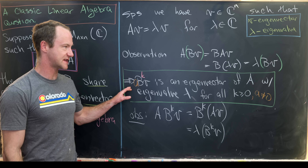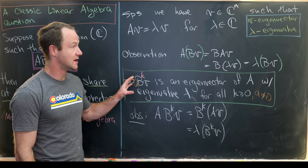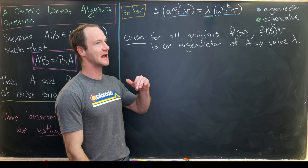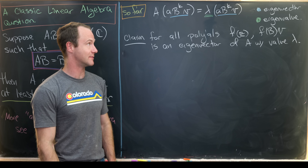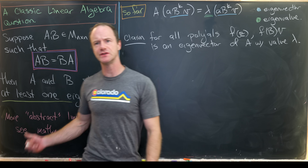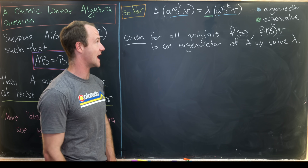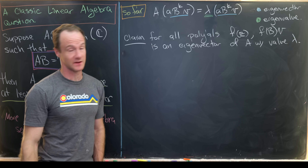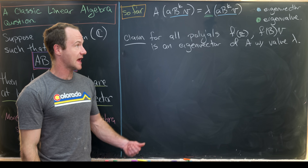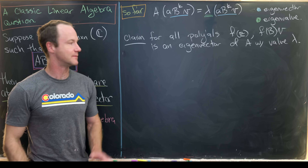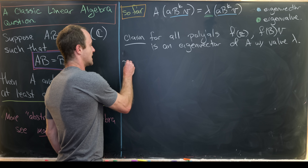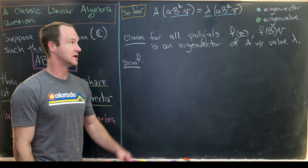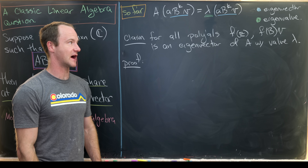We can generalize what's in the green box quite a bit further. For all polynomials F, F evaluated at B times V is also an eigenvector of A with eigenvalue lambda. Let's state this as a claim. If F(Z) = C_0 + C_1 Z + C_2 Z^2 + ... + C_m Z^m, then F(B) times V is an eigenvector of A with eigenvalue lambda.